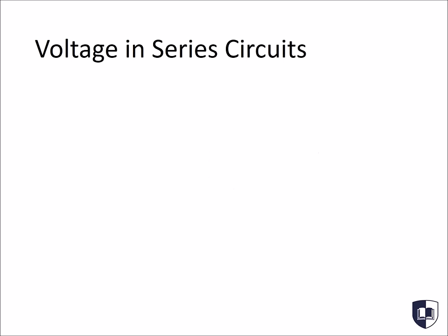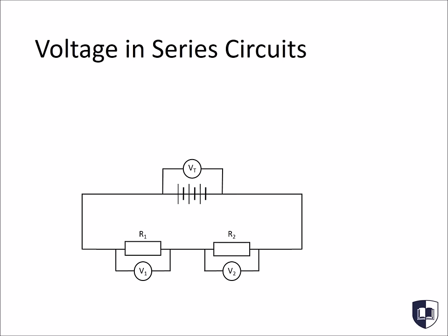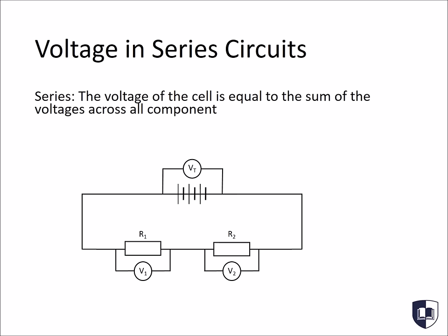So, how do we measure the voltage in a series circuit? Firstly, it's important to remember that in a series circuit, all components are placed on the same branch. Here, we have a simple series circuit. It contains two resistors, R1 and R2. Remember, that when using a voltmeter, it must always be placed in parallel to the components being measured, as you can see in the diagram here. In a series circuit, the voltage of the cell, or the battery, is equal to the sum of the voltages across all components. In other words, Vt is equal to V1 plus V2 in this diagram.